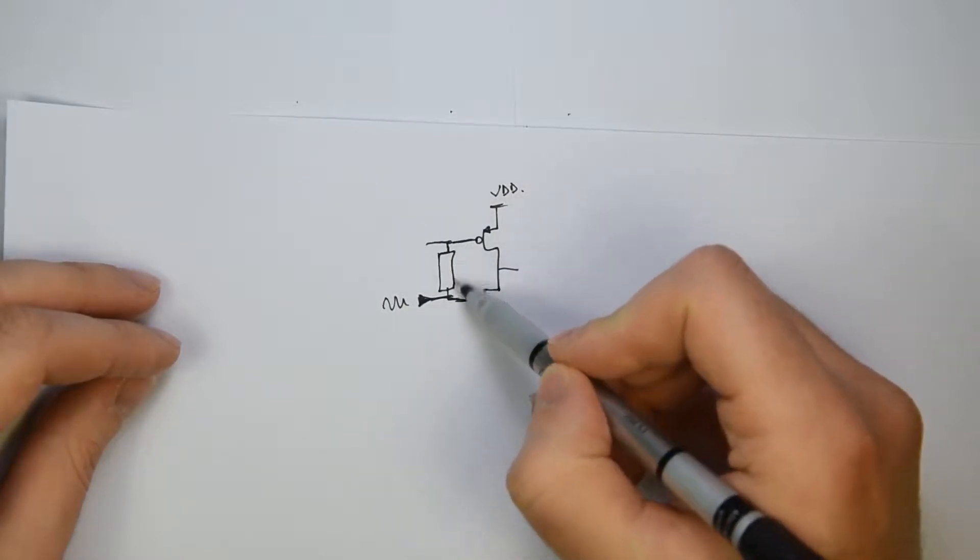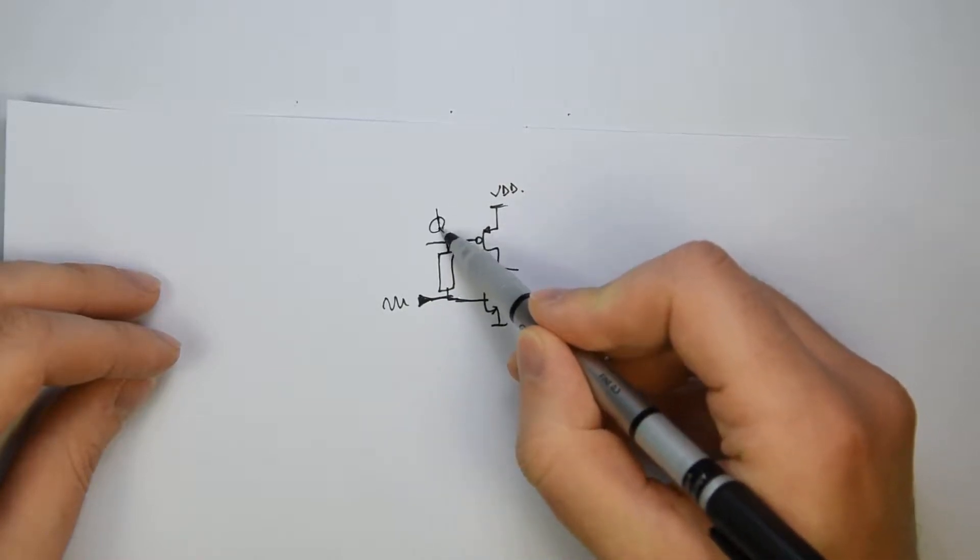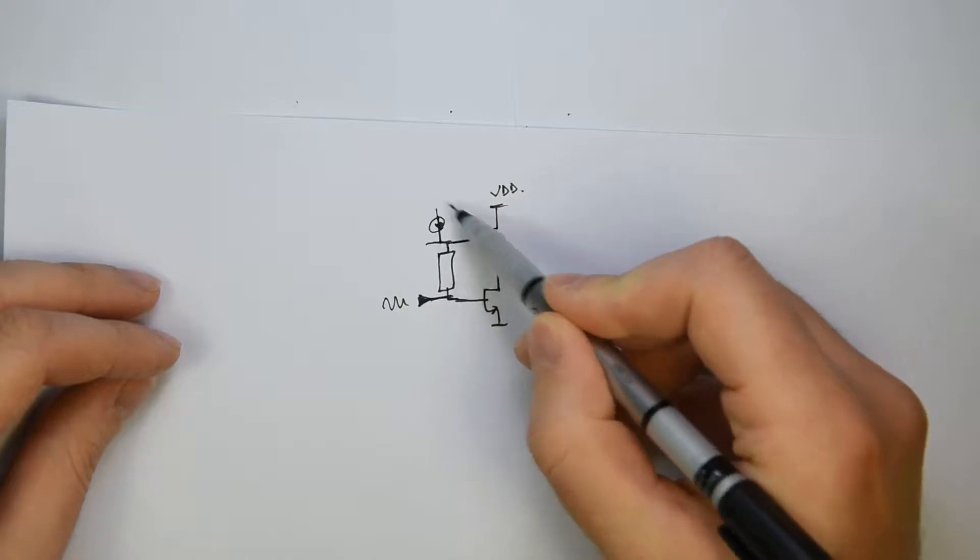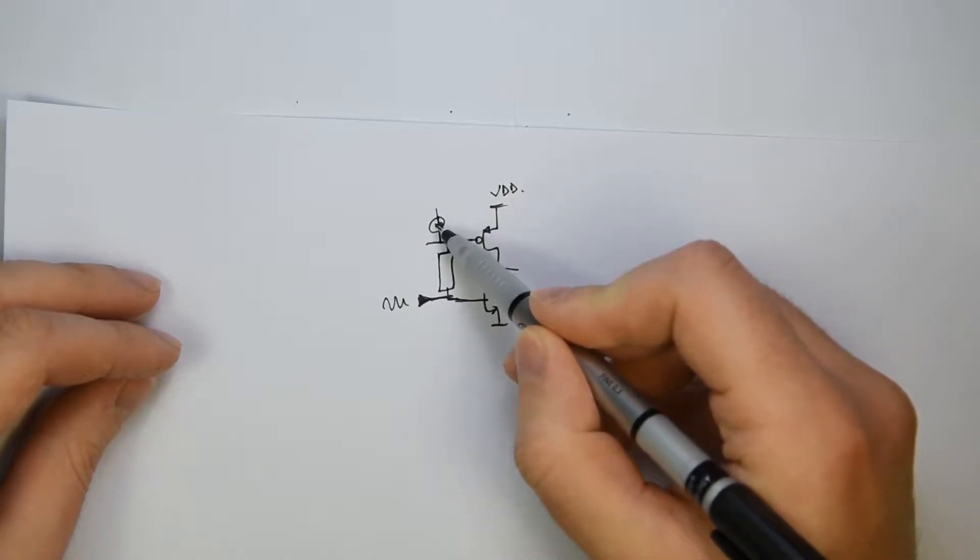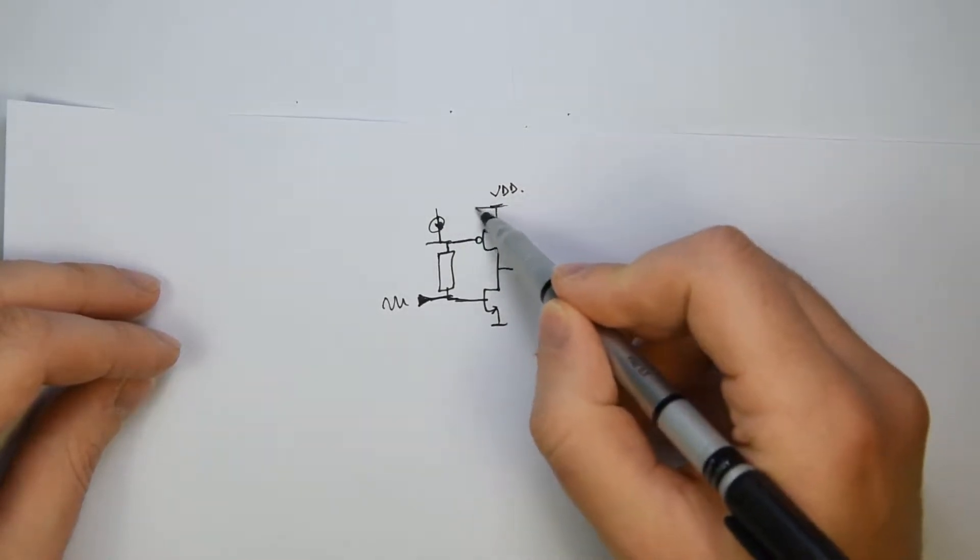Here, because this current has to flow somewhere, will be a simple current source. This is actually part of the intermediate stage, can be also part of the output stage, but in principle should be a current source.